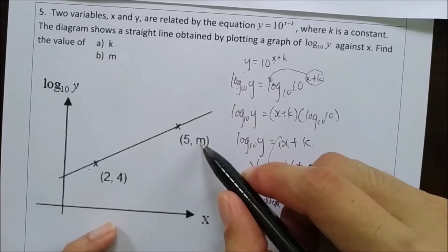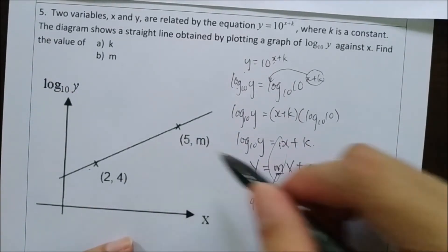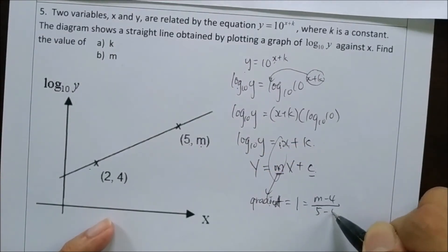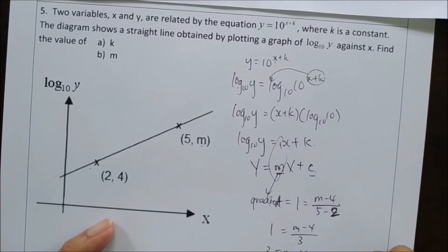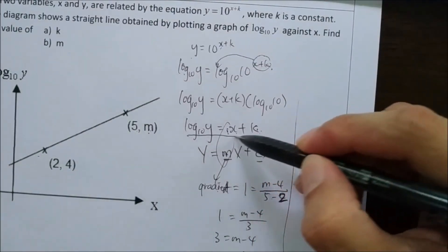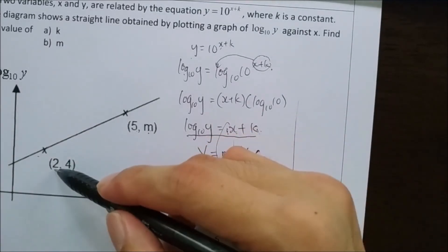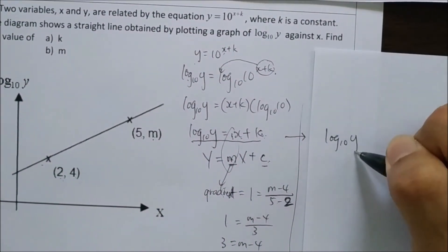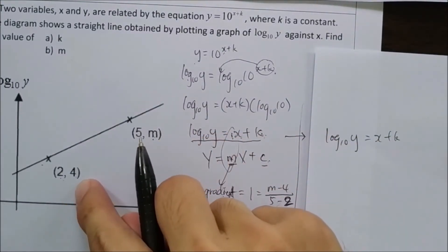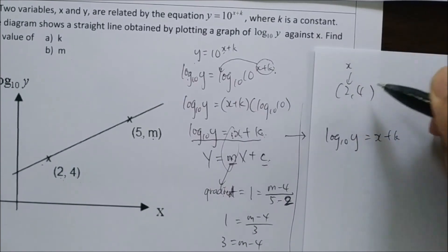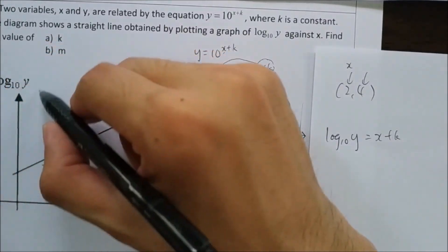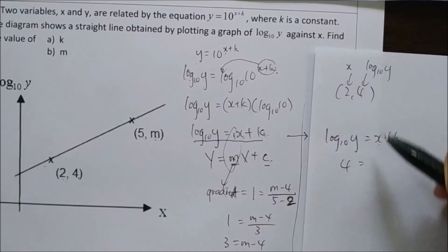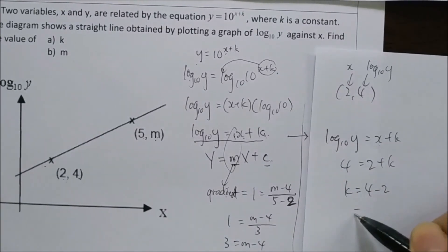Comparing log₁₀y equals mx plus k to the straight line equation y equals mx plus c, the gradient equals m and the y-intercept equals k. Using the gradient formula with the given points, the gradient m equals 1. To find k, we substitute the point (2, 4) — where 2 is x and 4 is the value of log₁₀y — into the equation: log₁₀y equals x plus k. So 4 equals 2 plus k, giving k equals 2.